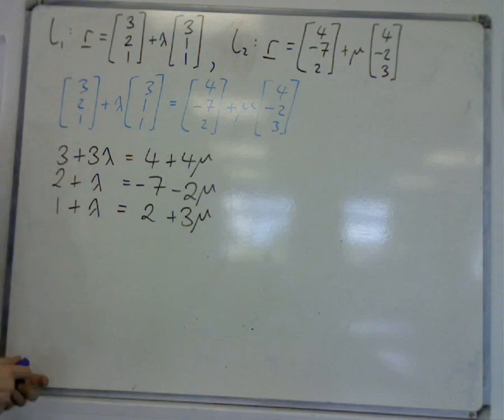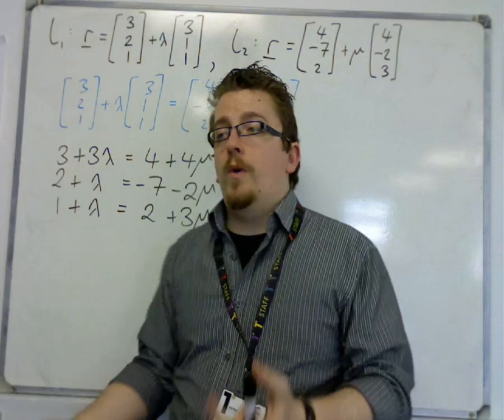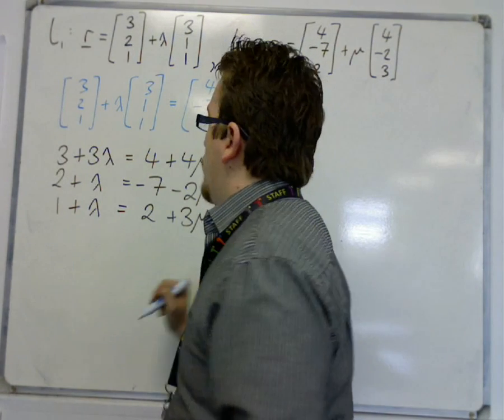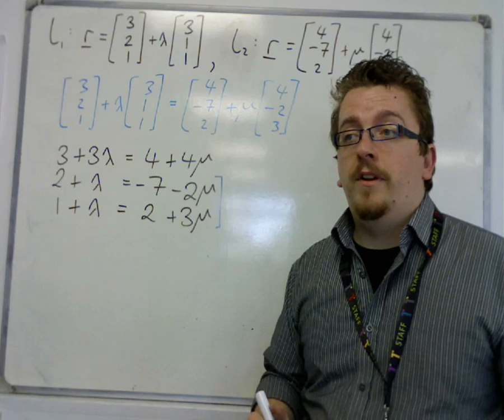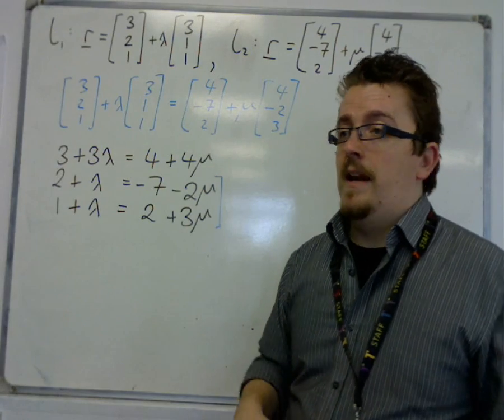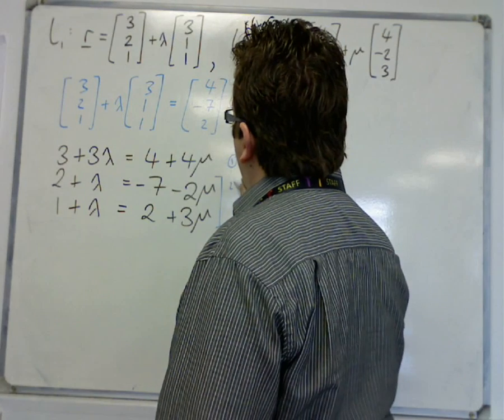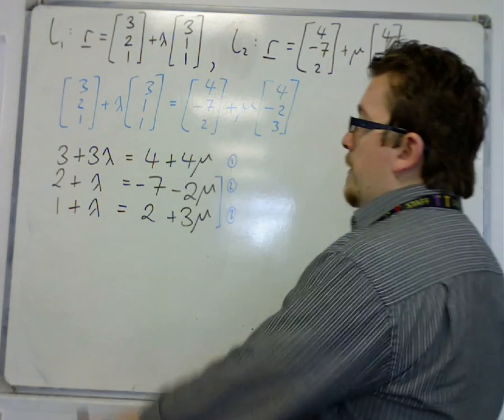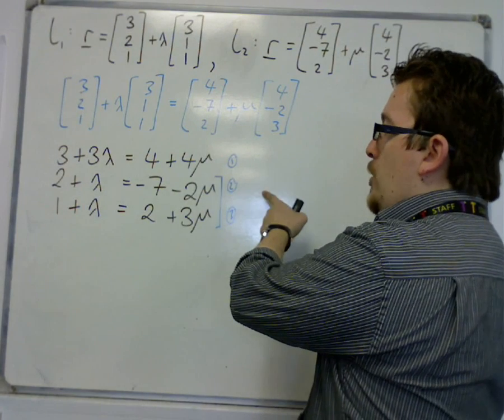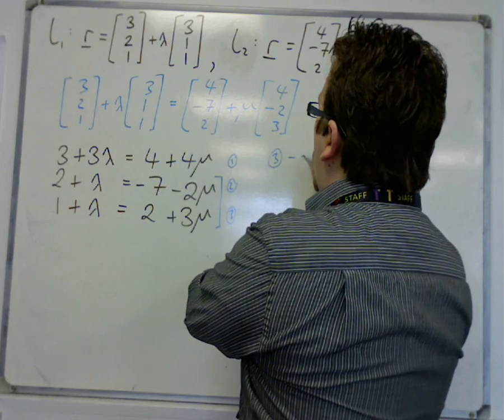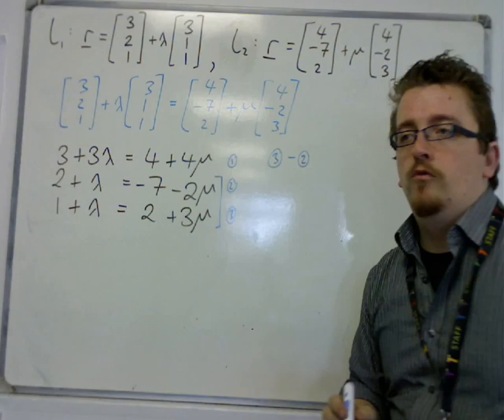So at this point, decide which two equations you're going to work with. I'm going to work with these two equations because I see a lambda and a lambda, which will easily eliminate the lambdas. So I'm going to call these equations 1, 2, and 3, and I'm going to have equation 3 take away equation 2 to make sure my mu's remain positive.